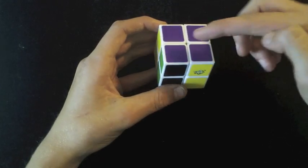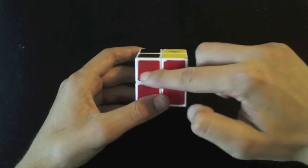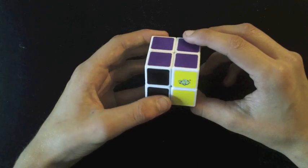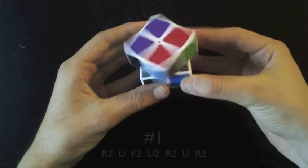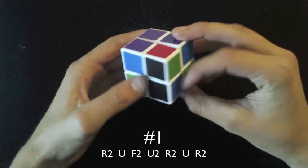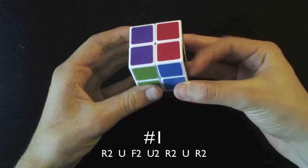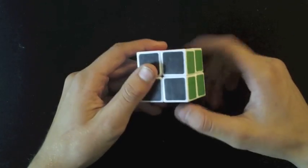What this PLL does is it swaps these 2 pieces on the top here, and then it swaps these 2 pieces on the bottom here, and the algorithm for this is as follows. R2, U, F2, U2, R2, U, R2. And as you can see, we've finished the cube.